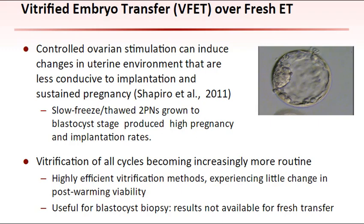It has been reported for years that controlled ovarian stimulation can induce changes in the uterine environment that are less conducive to implantation and sustained pregnancy. Slow freeze-thawed two pronuclei embryos grown to blastocyst stage for transfer produced high pregnancy and implantation rates. Highly efficient vitrification methods experiencing little change in post-warming viability have enabled vitrification of all cycles to become increasingly more routine. This may be useful in pre-implantation genetic testing cycles when blastocyst biopsy has occurred and test results are not available for fresh transfer.